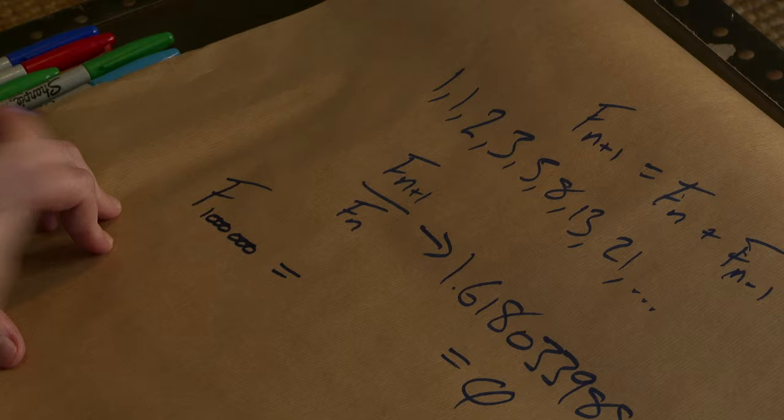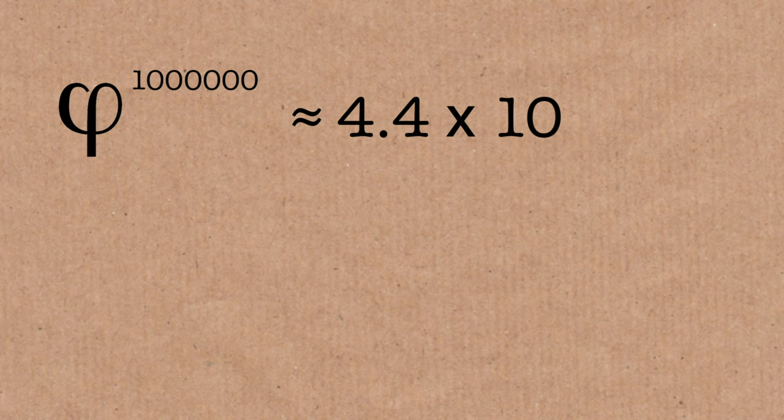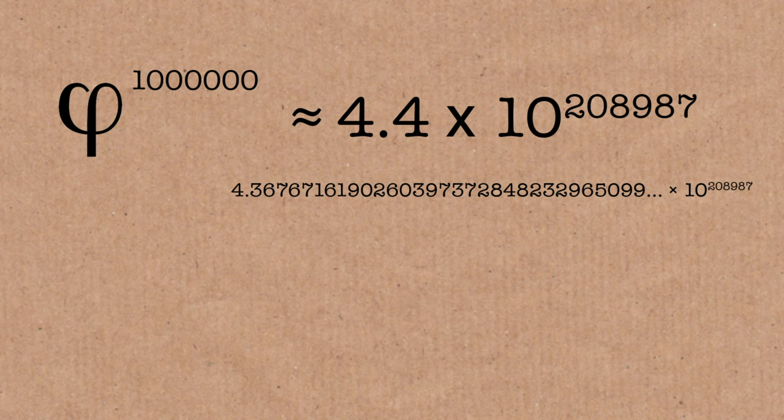You can work out the millionth Fibonacci number. So if you wanted to work out the millionth Fibonacci number, what you're doing is multiplying by the golden ratio a million times. Approximately equal to golden ratio, which is this symbol, to a million. And I can tell you what that is. 4.4 times 10 to the 208,987.